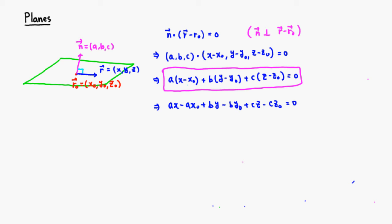0. Then, since ax0, by0, cz0 are all numbers, we're going to just put all these guys on the other side. Then you end up with ax plus by plus cz is equal to ax0 plus by0 plus cz0. All right, since this is just a number right here,